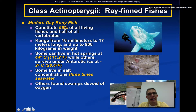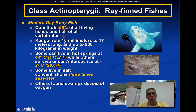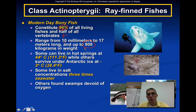Modern-day bony fish actually constitute about 96% of all living fishes on this planet, and this is about half of all the vertebrates — animals with backbones — found on the planet as well. They can range from about 10 millimeters to about 17 meters long, and they can weigh up to 900 kilograms — roughly 1,800 to 2,000 pounds. That's a pretty hefty fish.